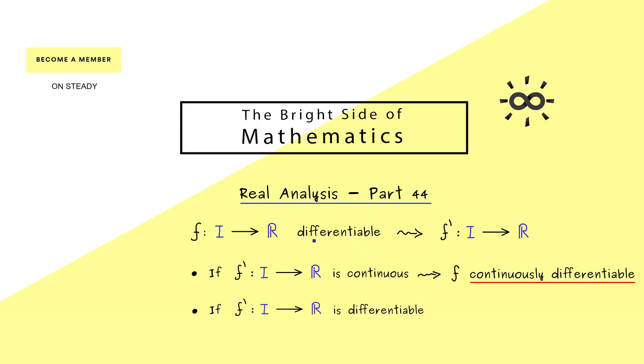This is simply a new property the function can have, and it's a stronger property than just being differentiable. Even stronger than this would be the case that the derivative is also differentiable. Then we call the function f simply 2 times differentiable. If the function has this property, we get the derivative of the derivative, f'', and usually one denotes that without the parentheses.